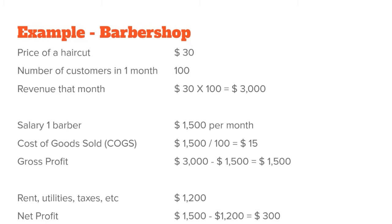The barbershop offers only one service — a haircut — and the price is the same for men and women: $30. In this case, we expect in our first month to have 100 customers. Revenue is the amount of money that customers pay us in a certain period. It's slightly different from cash: if we sell a service right now and the customer pays us right now, cash and revenue are the same.